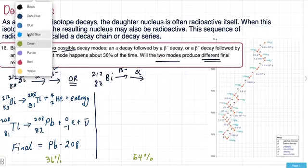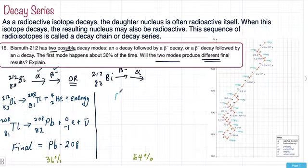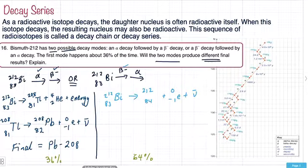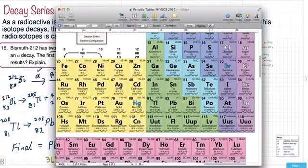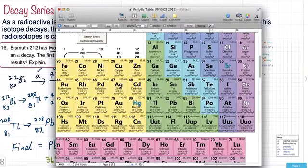So I'm just going to change color or do light blue. So again we start off with the 83, 212, bismuth, beta decay first. So your electron first, the antineutrino. And we need the bottom to add up to 83. So this has to be 84 and 212. So with our periodic table, 84 is polonium, Po.